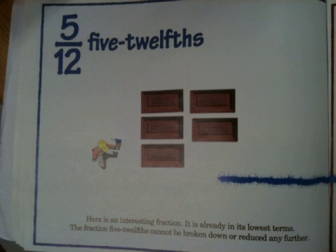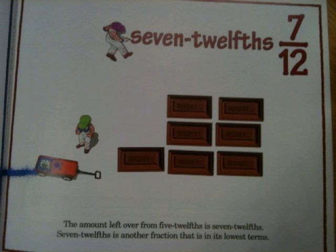Five twelfths. Here is an interesting fraction — it is already in its lowest terms. The fraction five twelfths cannot be broken down or reduced any further. Seven twelfths is the amount left over from five twelfths, and seven twelfths is also a fraction that is in its lowest terms.